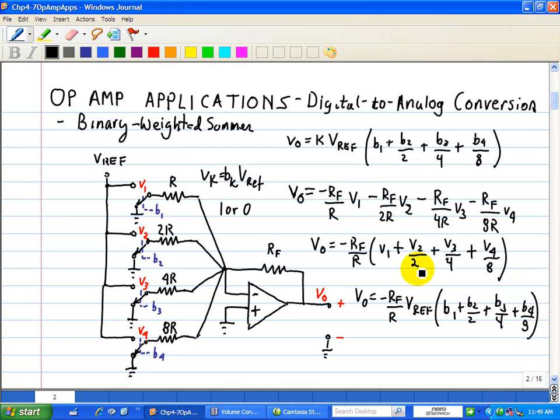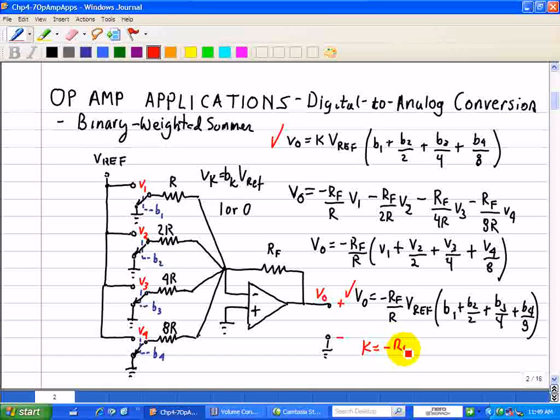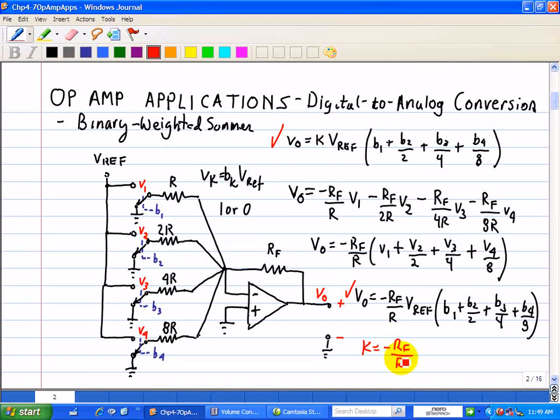And hence, we basically implemented this relationship here, with this op-amp circuit, shown here, where K is equal to negative RF over R, some type of scale factor or constant.